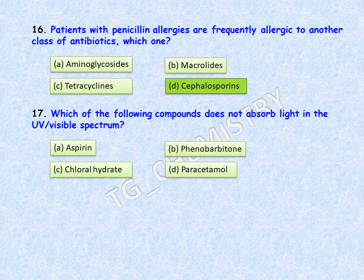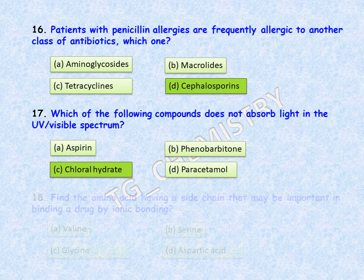Next question: which of the following compounds does not absorb light in the UV-visible spectrum? Options are: A, aspirin; B, phenobarbitone; C, chloralhydrate; D, paracetamol. The correct answer is option C, chloralhydrate.